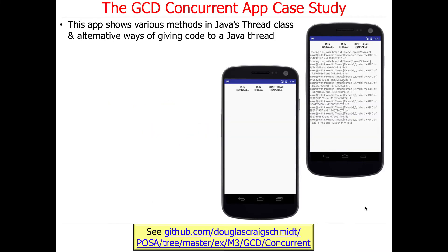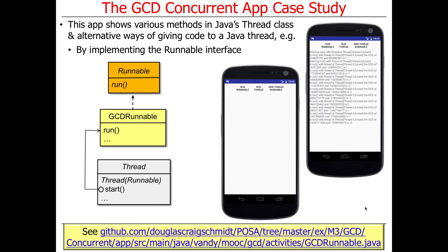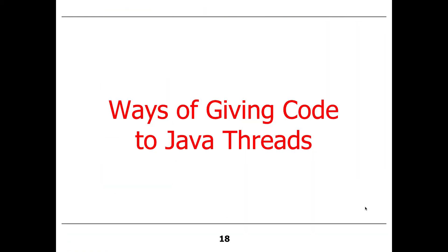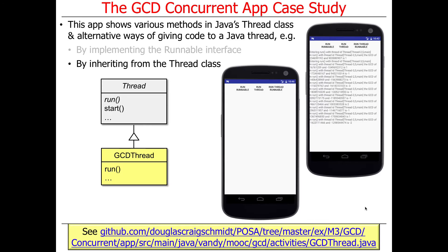Here's a quick overview of the case study. It prompts you with a bunch of different ways to run a Java thread, and then you select one of these ways. One way is by implementing the runnable interface — that goes ahead and does GCD computations, taking some big random numbers and figuring out their GCD. You can also inherit from the thread class itself. And there's also a variant of doing all this stuff as well.